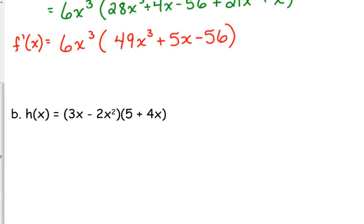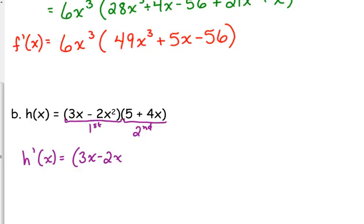Let's look at another one. H of x is the binomial 3x minus 2x squared times the binomial 5 plus 4x. Technically we could FOIL that and apply the power rule, but let's apply the product rule here. This is our first, this is the second. So h prime of x is equal to the first times the derivative of the second. The derivative of the second is just 4, so no parentheses needed.